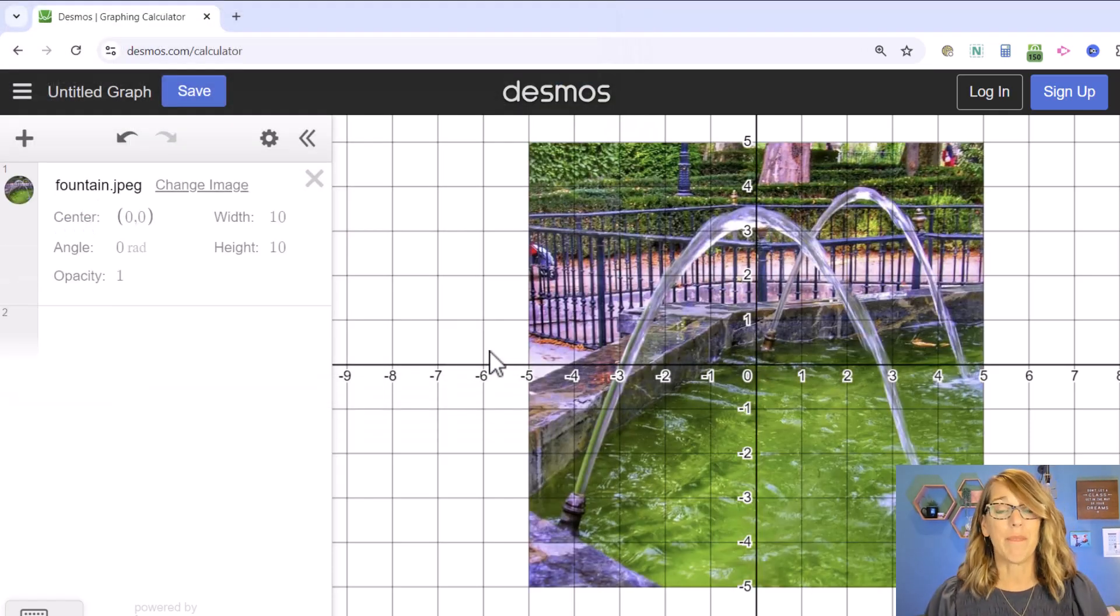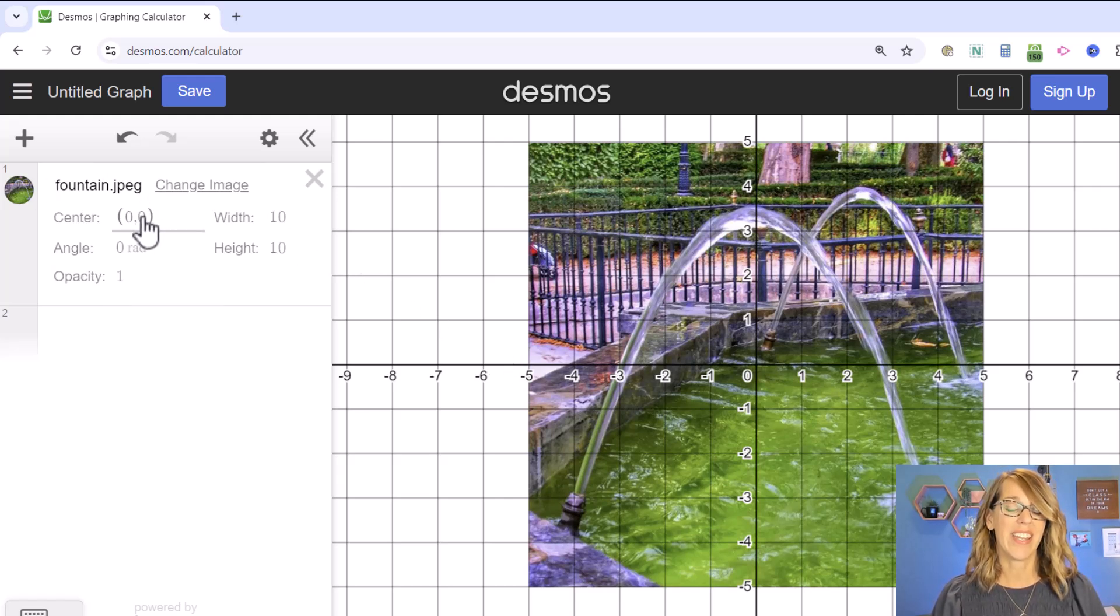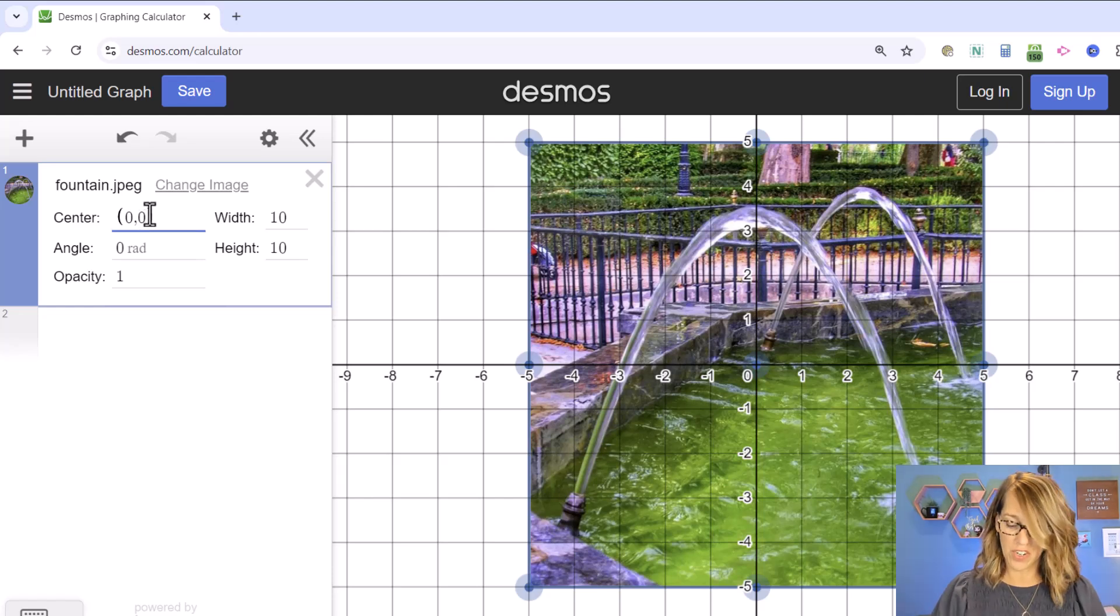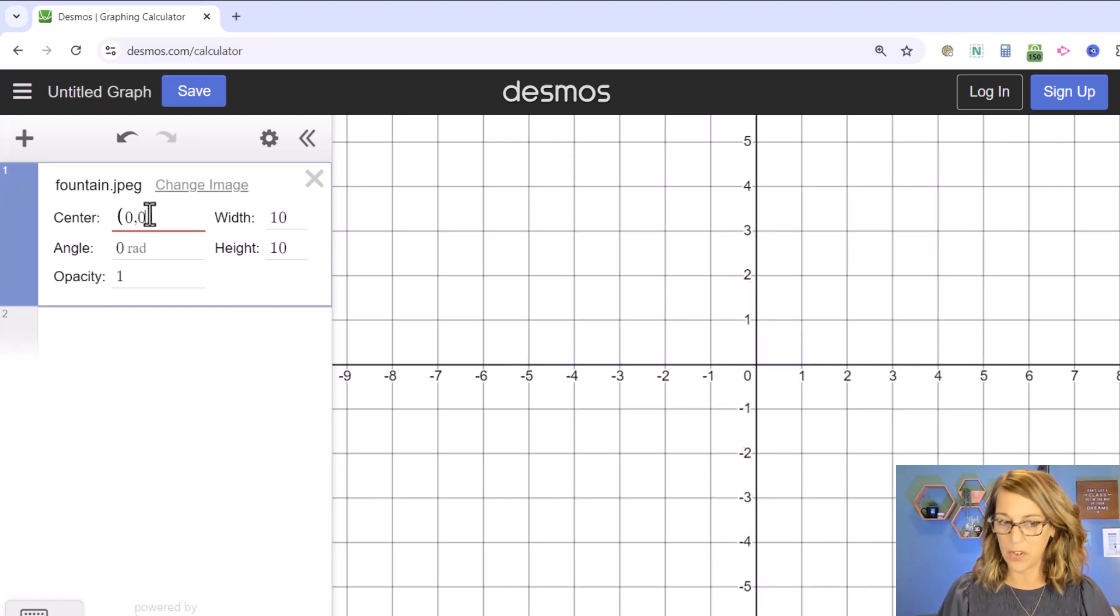Desmos does its best to center it, but you'll notice over here it says fountain.jpg and it gives you some options. So you can change the center here, which I don't really want to do.